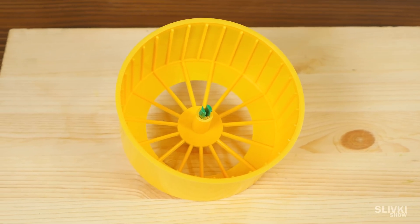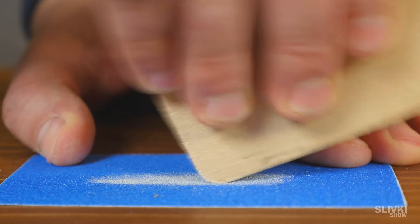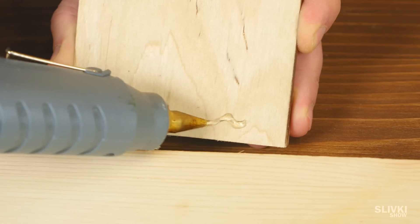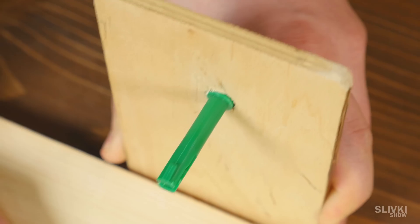First, we need a running wheel for hamster and a piece of plywood with a hole by a diameter of a mounting wheel. Using hot melt adhesive, mount plywood vertically on a piece of board.